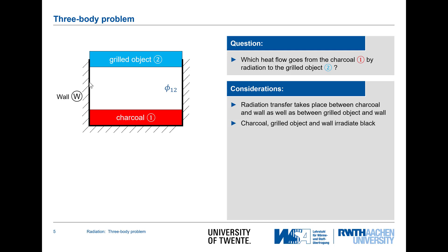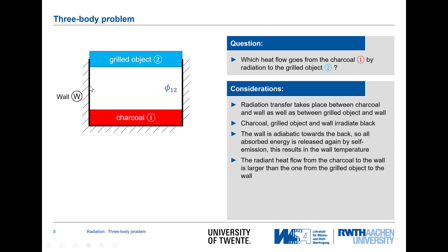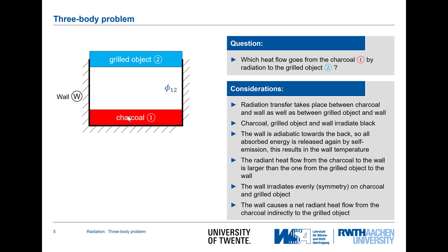All of these radiate black. The wall is considered to be adiabatic towards the back, and this means all the radiation that the wall receives is absorbed and then again emitted — and this determines the wall temperature. The charcoal, having the higher temperature compared to the grilled object, will provide more radiation to the wall. The wall itself in geometric terms behaves symmetrically towards the grilled object and the charcoal, and the higher temperature of the charcoal causes the heat to flow from the wall to the grilled side.